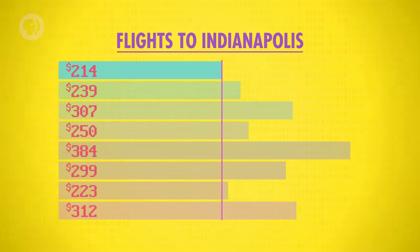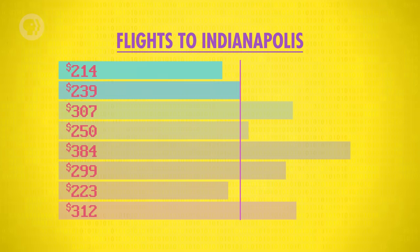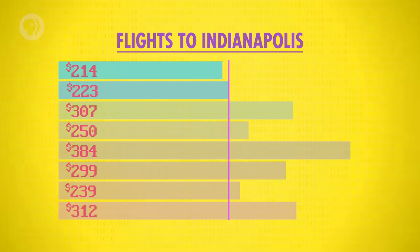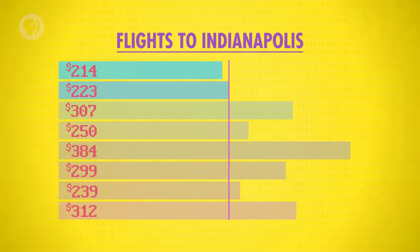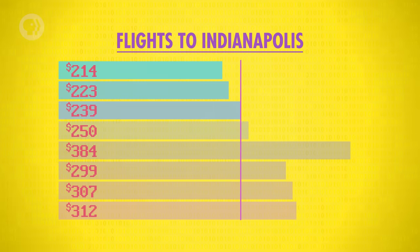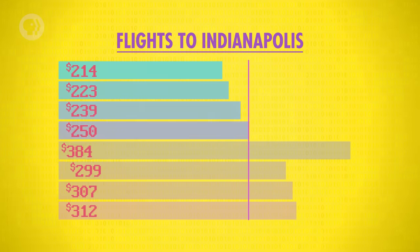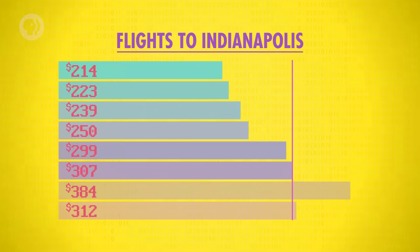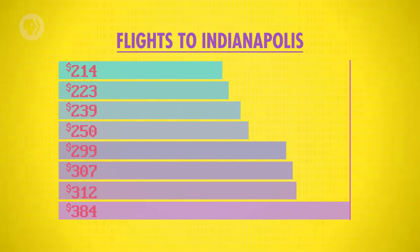Now we repeat the same procedure, but instead of starting at the top, we can start one spot below. First we see 239, which we save as our new smallest number. Scanning the rest of the array, we find 223 is the next smallest, so we swap this with the number in the second spot. Now we repeat again, starting from the third number down — this time we swap 239 with 307. This process continues until we get to the very last number, and voila, the array is sorted, and you're ready to book that flight to Indianapolis.